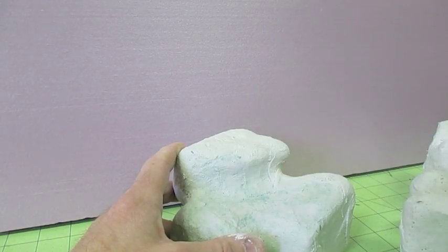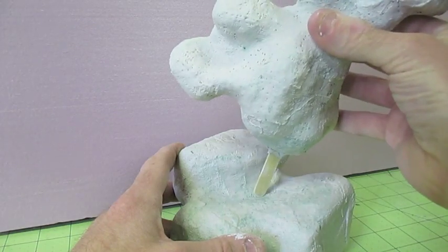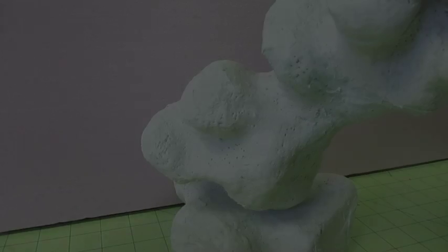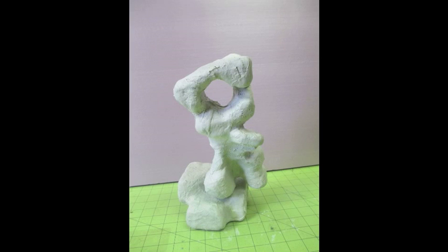Use an X-Acto knife to cut a hole in the smaller project. This will help in combining both projects.